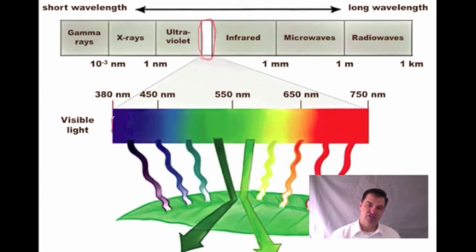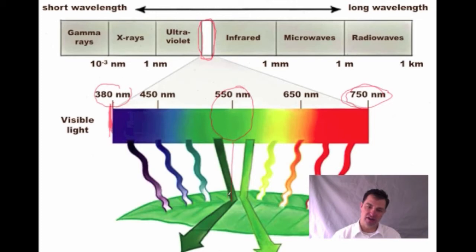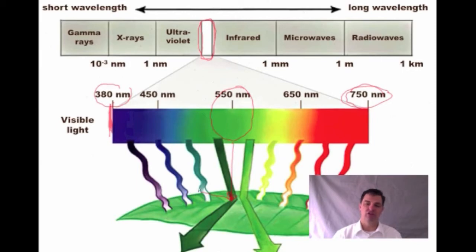A rainbow is essentially sunlight as it passes through water, breaking it up into its different colors. On the lower end here are 380 nanometers versus 750 nanometers — a short wavelength versus a long wavelength, associated with different colors: purple, blues, greens, yellows, oranges, and reds. Plants are green, and anything really is the color it appears because we perceive it that way — the light that bounces onto the leaf that is not absorbed bounces back, so we see green because the green light reflects off.